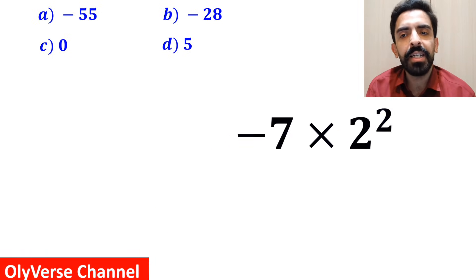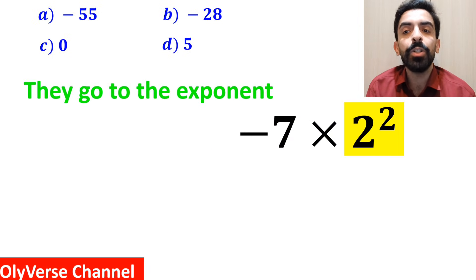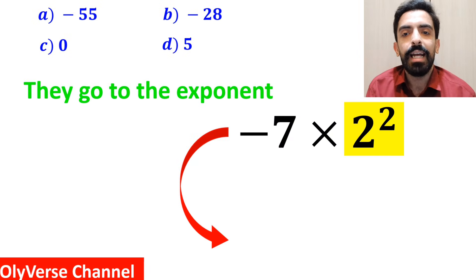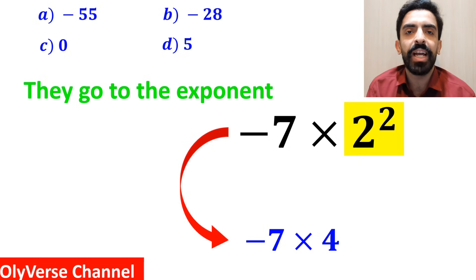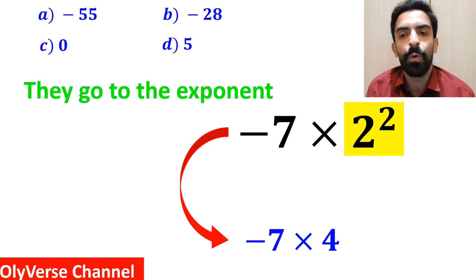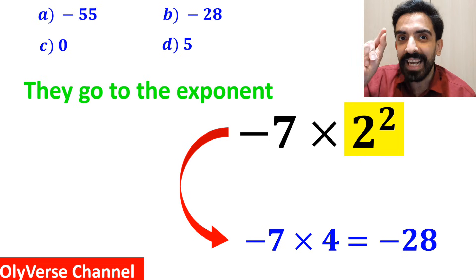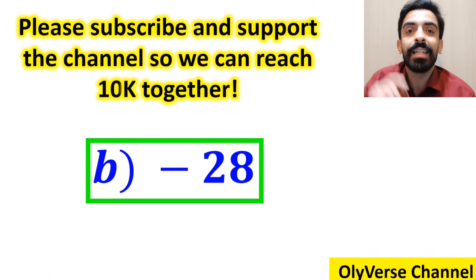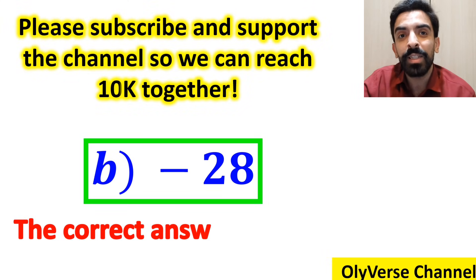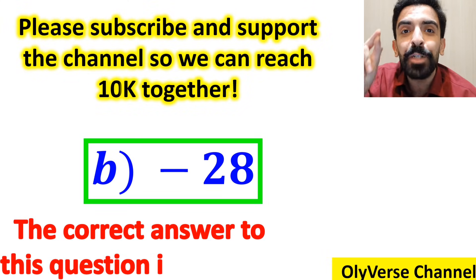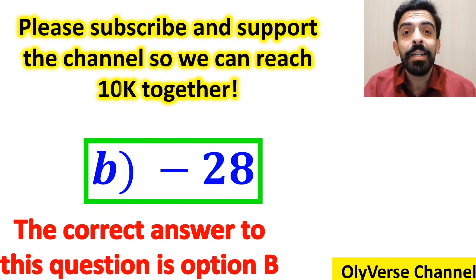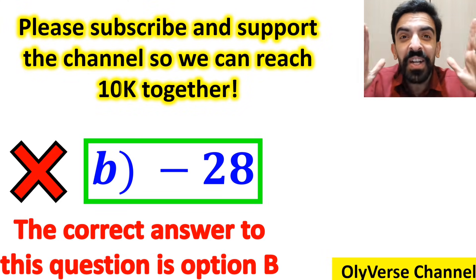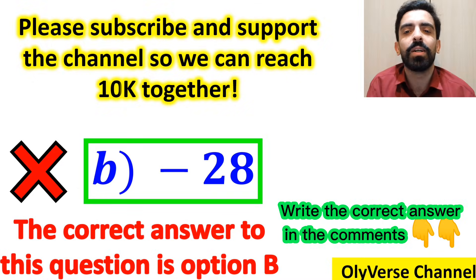In the final step, they go to the exponent and replace this expression with negative 7 multiplied by 4, which gives them the answer negative 28. They conclude that the correct answer is option B. However, that's definitely wrong.